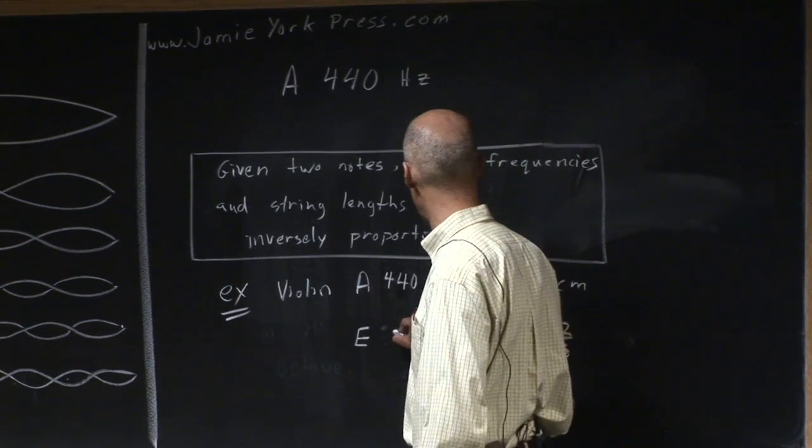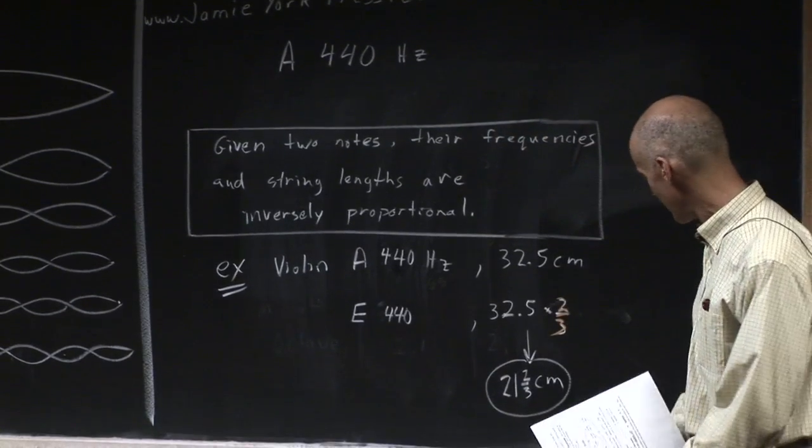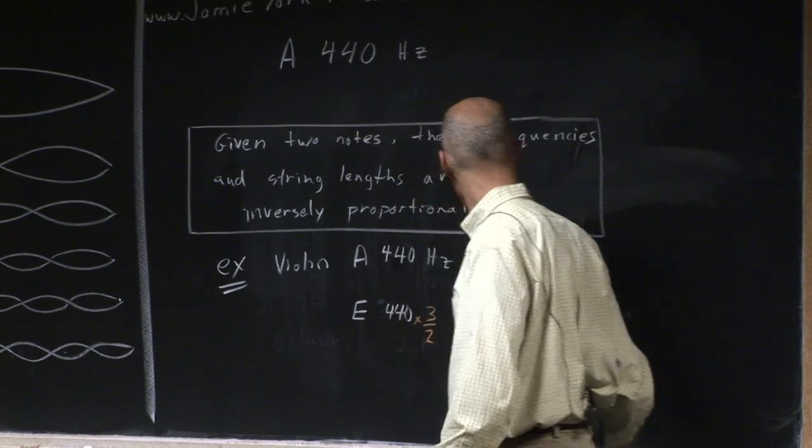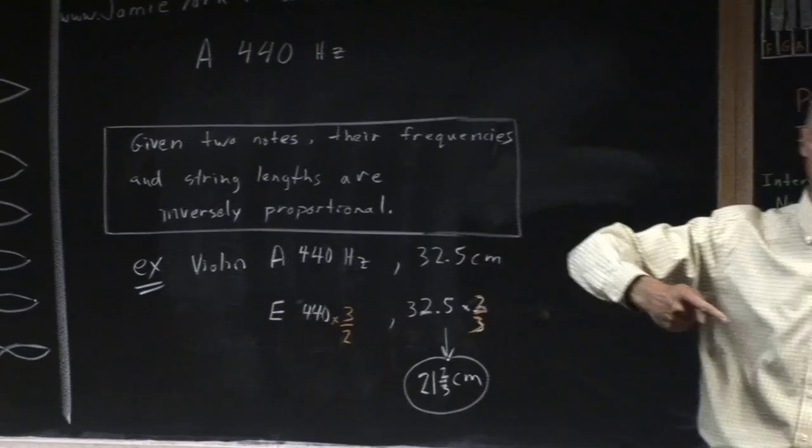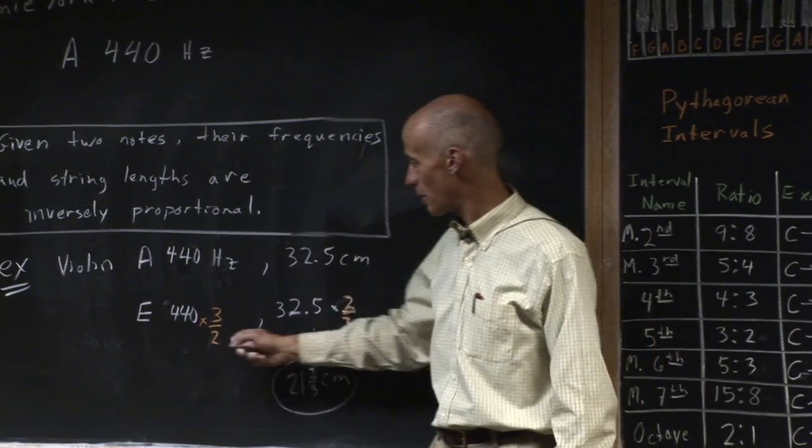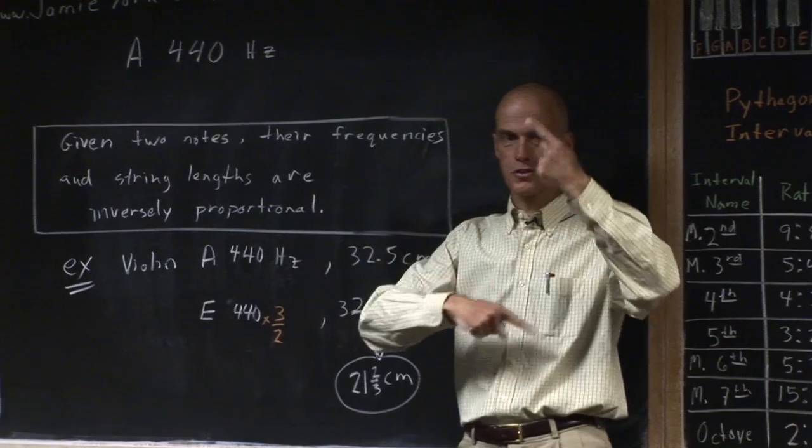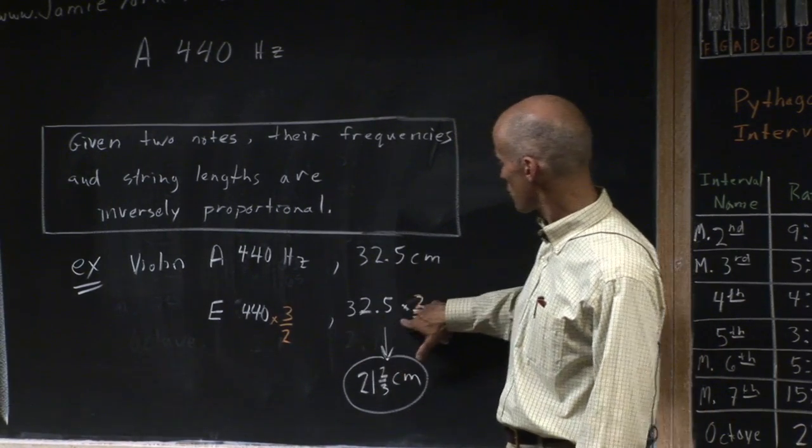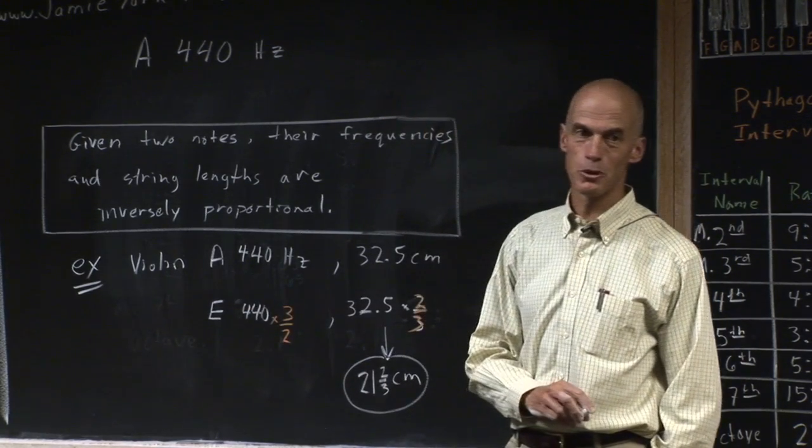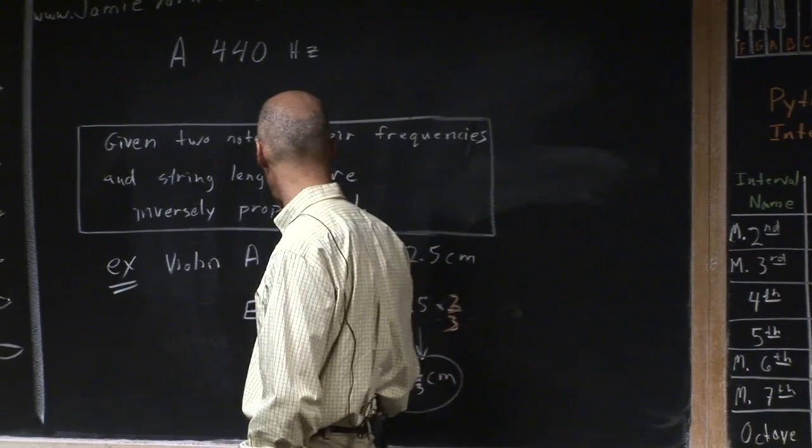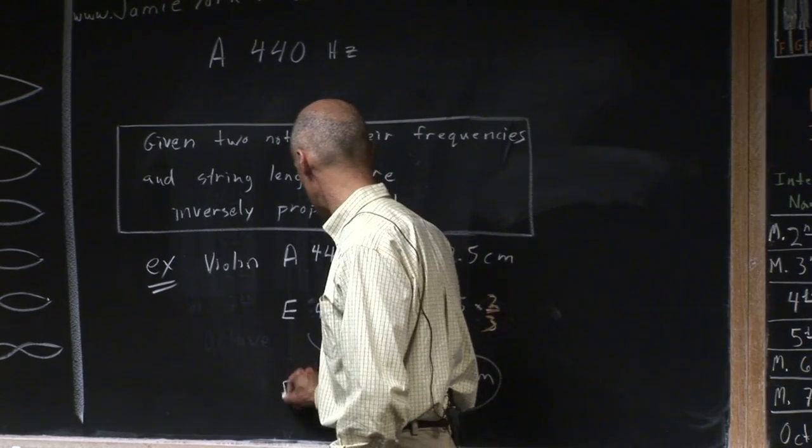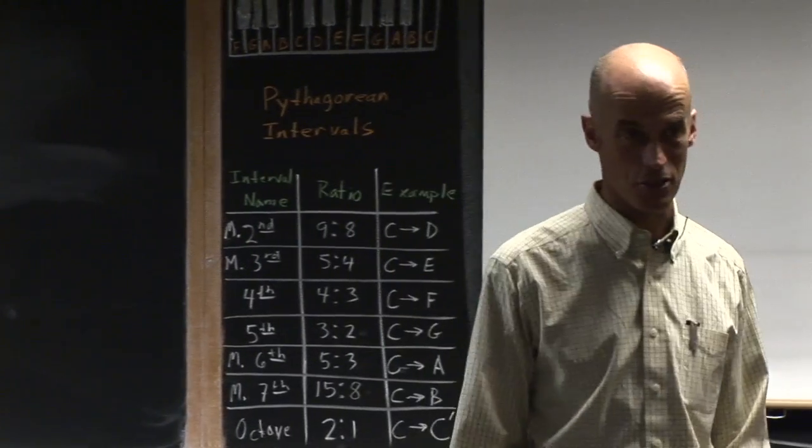But now when I calculate the frequency, I'm going to take 440 and multiply by the reciprocal. What does it mean to be inversely proportional? It means if one thing goes up, the other thing goes down. If the string length goes down, the frequency goes up. The string length we multiply by two-thirds, but the frequency we get by multiplying by three over two. Inversely proportional. So we'll get 660.